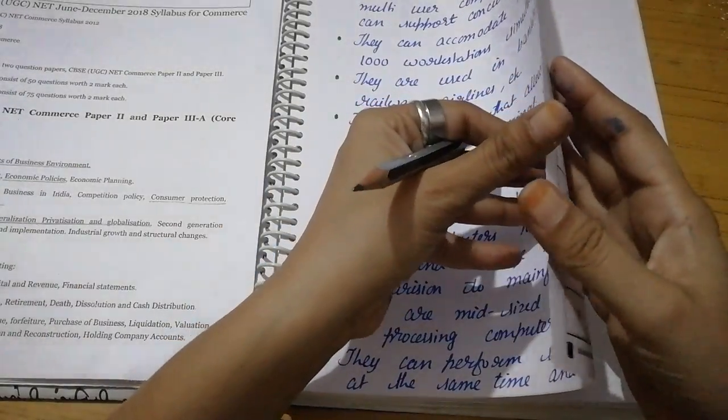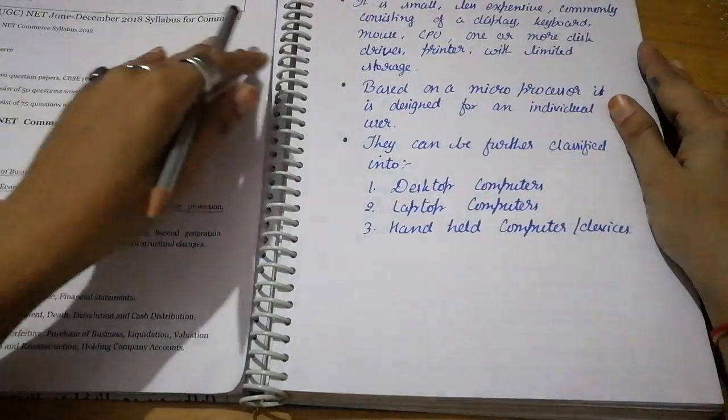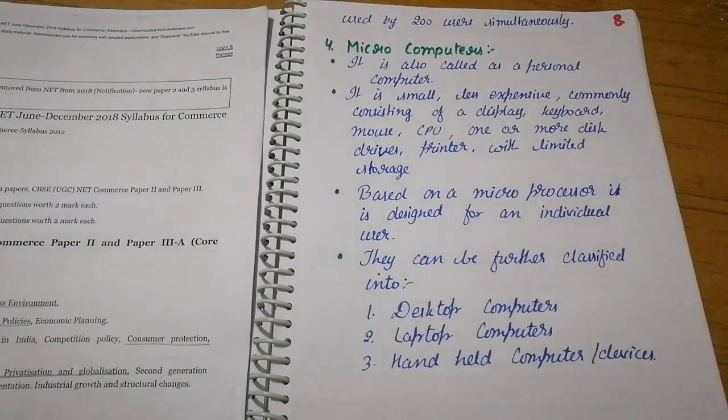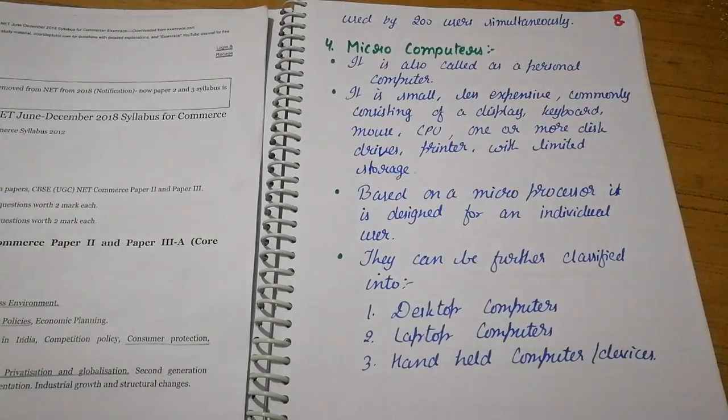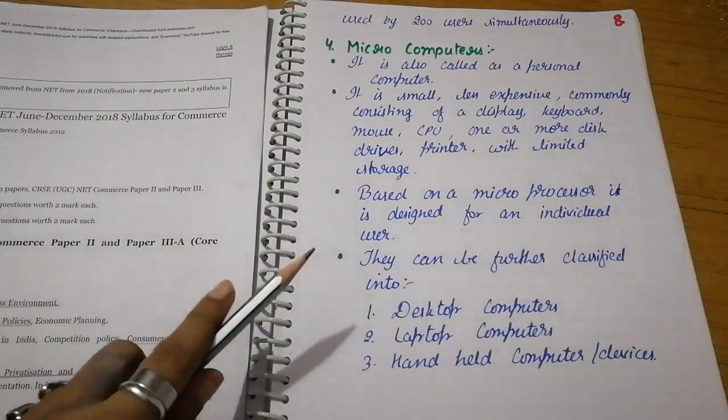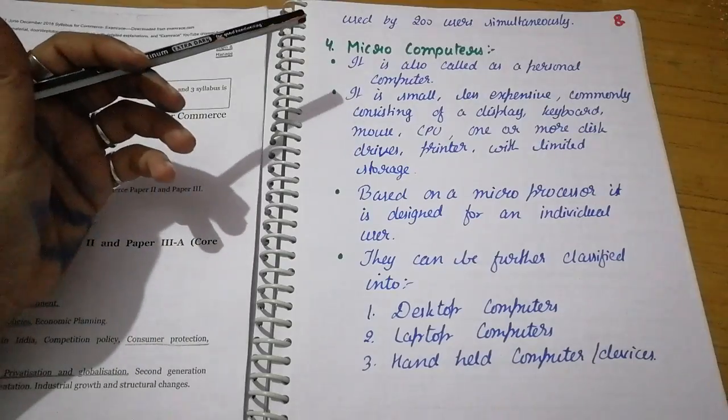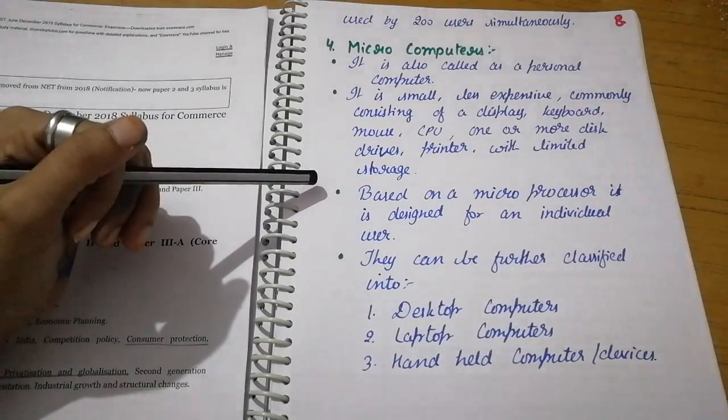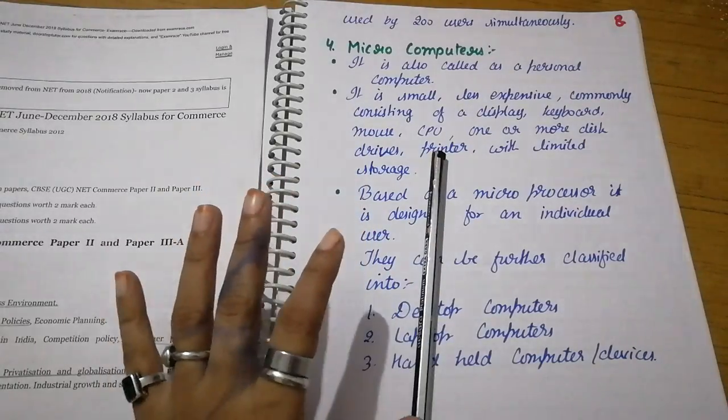Mini computers have lesser speed and storage capacity compared to mainframe computers. They are mid-sized multi-processing computers that can perform several actions at the same time. They can be used by 200 users simultaneously. So mini computers are like mainframe computers but smaller in size with less storage and processing capacity.